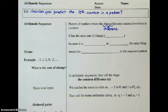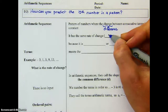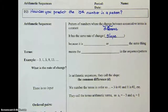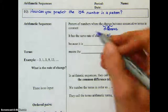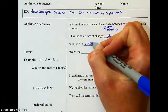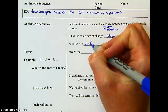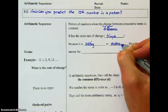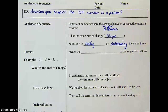That means it's going to have the same rate of change, which is the exact same thing as our slope. So because it is adding or subtracting the same thing every time, that means it's got to be a linear equation.